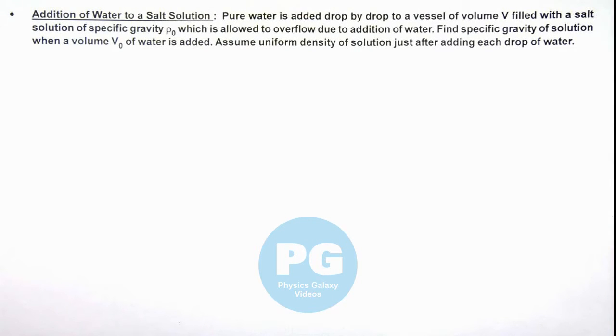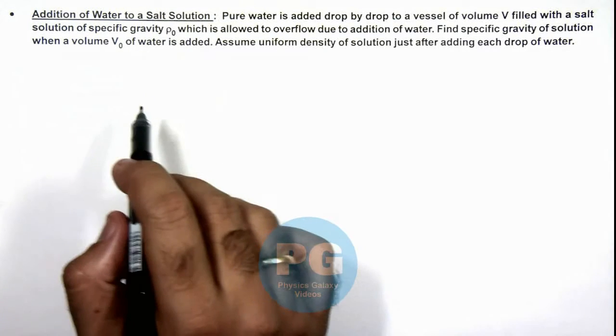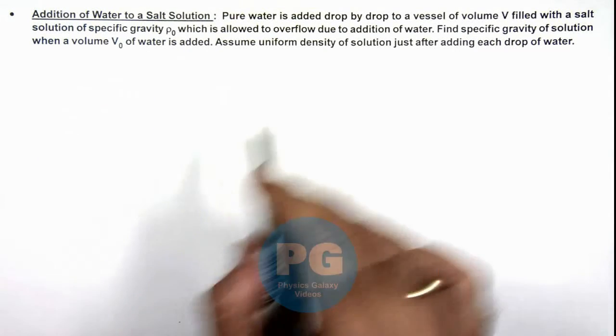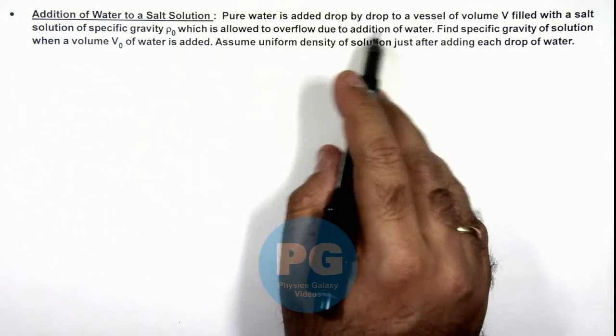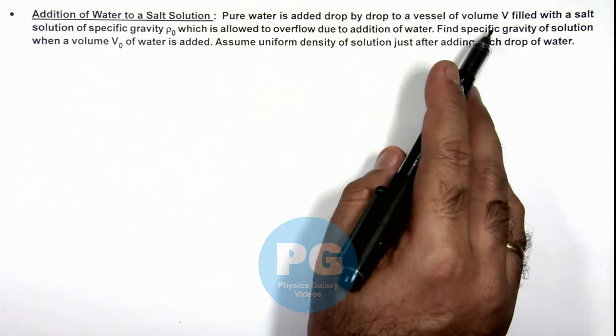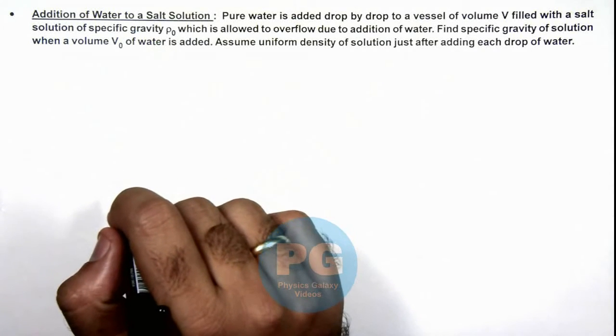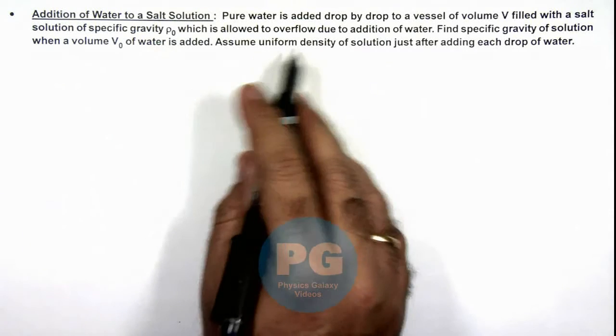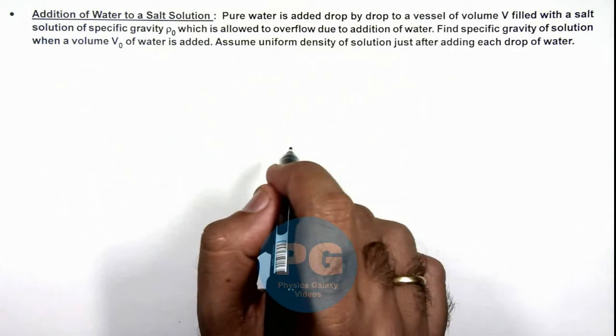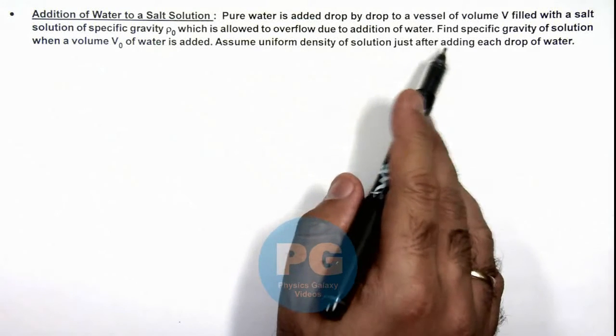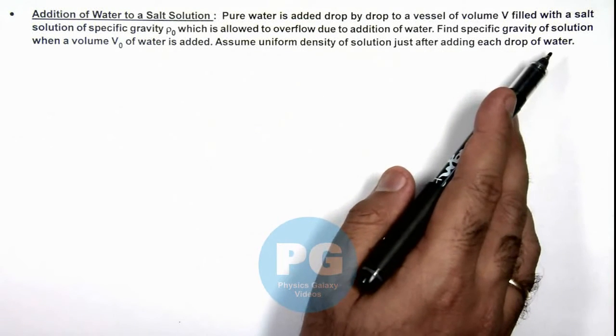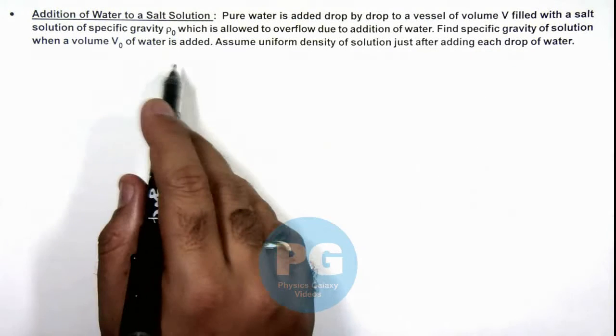In this illustration, we'll analyze a case of addition of water to a salt solution. We are given that pure water is added drop by drop to a vessel of volume V, filled with a salt solution of specific gravity ρ₀, which is allowed to overflow due to addition of water. We are required to find the specific gravity of solution when a volume V₀ of water is added to it.